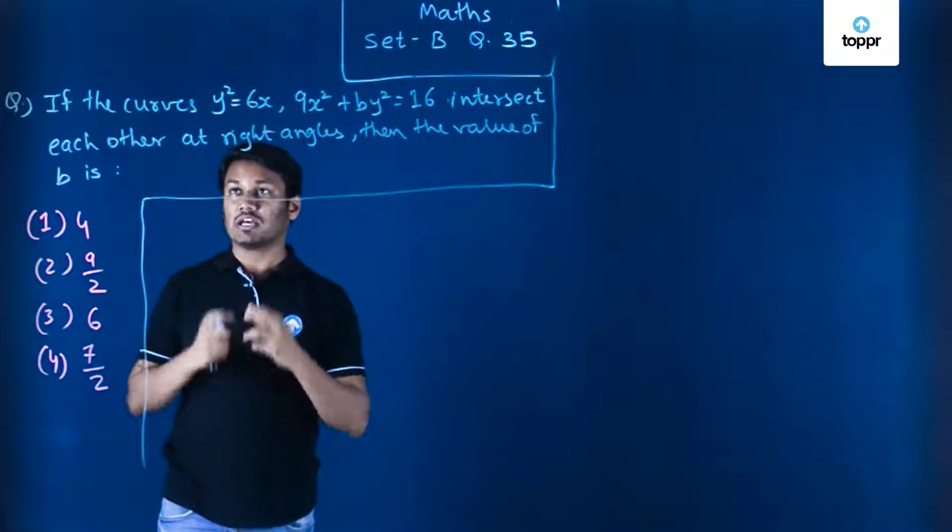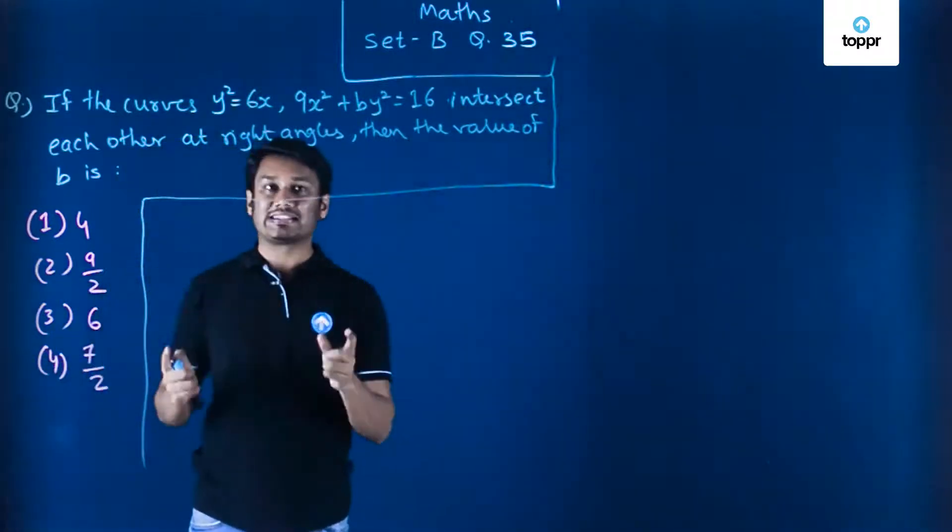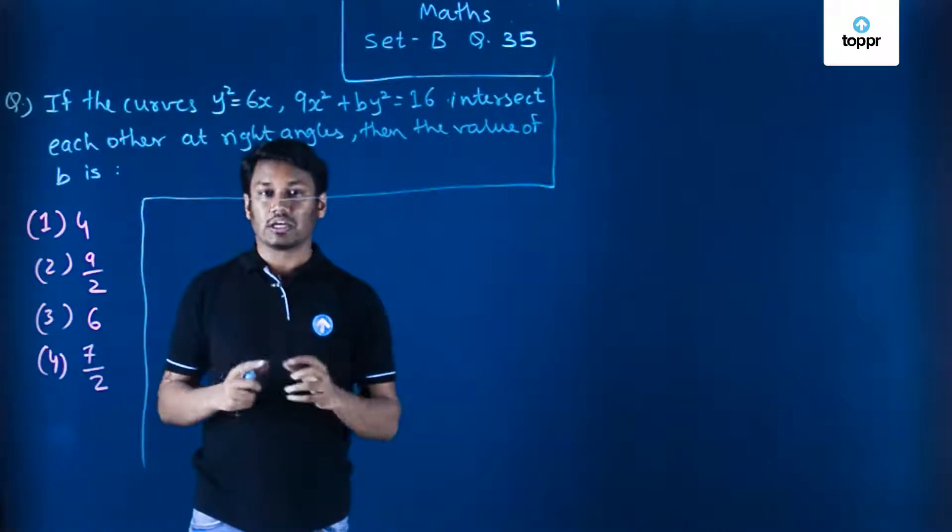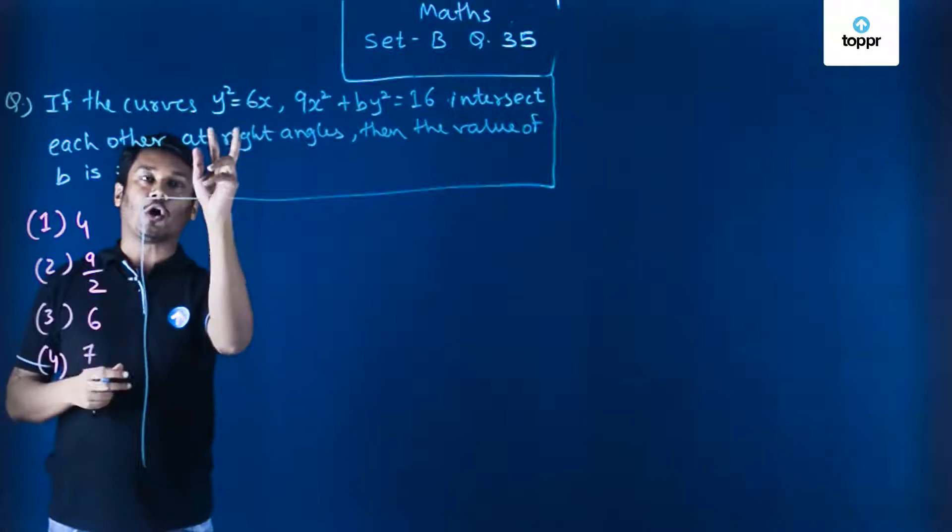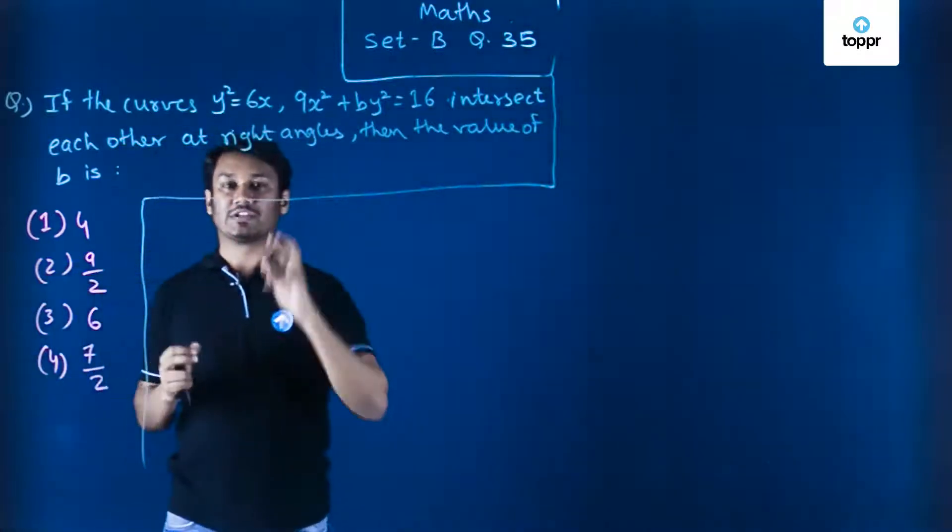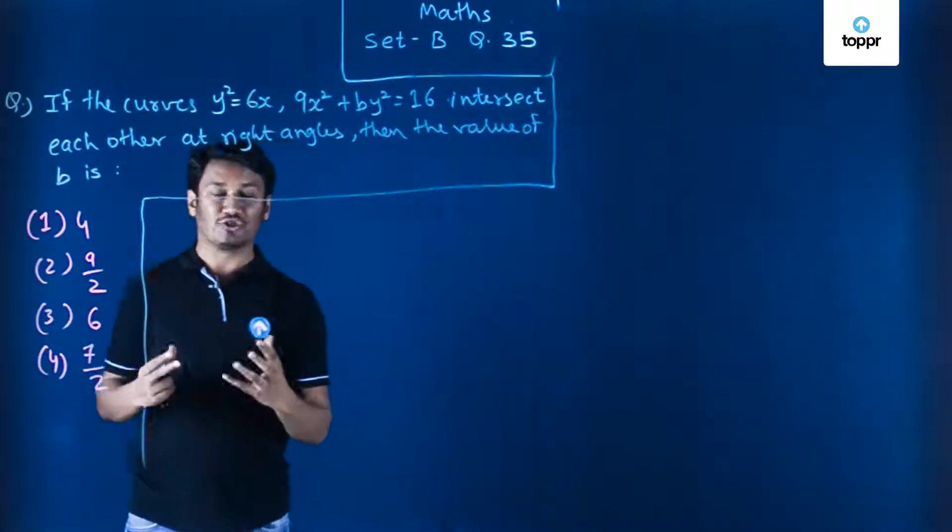Let us see how we solve this question. We are given two curves and the question says they are intersecting each other at right angles. So what we can do is find out the derivative of the first curve as well as of the second curve, which will in general represent the slopes of tangents.